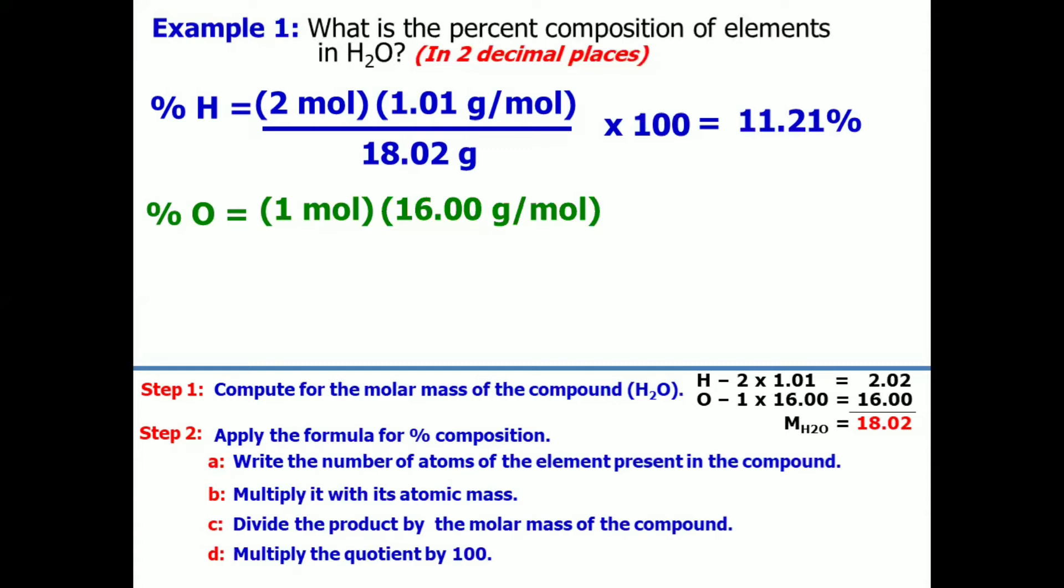Then, divide the product by the molar mass of the compound. So, it is 18.02 grams. Then, times 100. What is the result? You got it right. The answer is 88.79%.